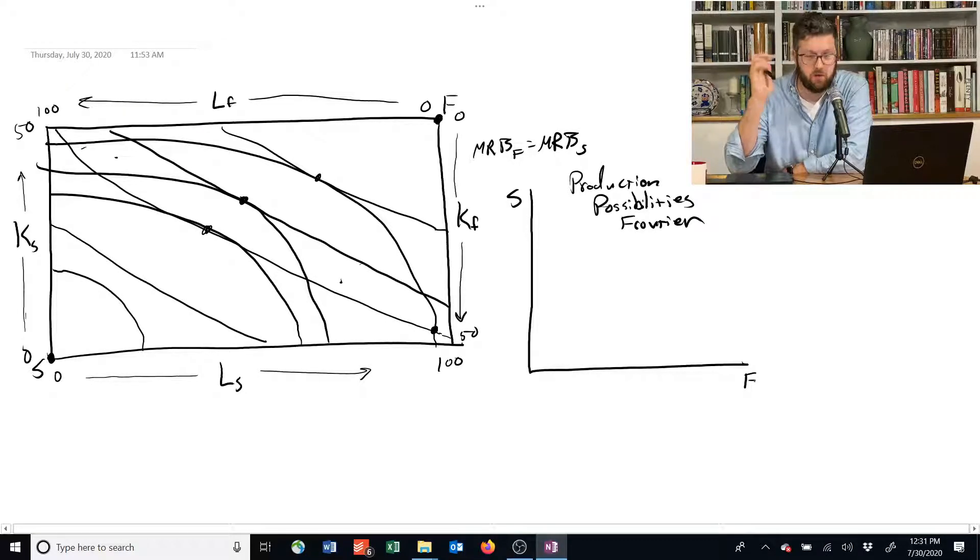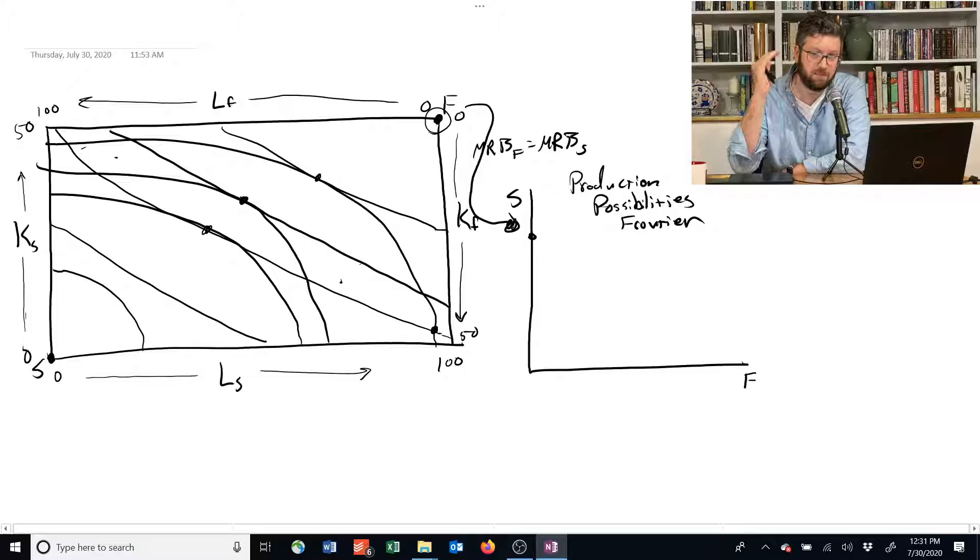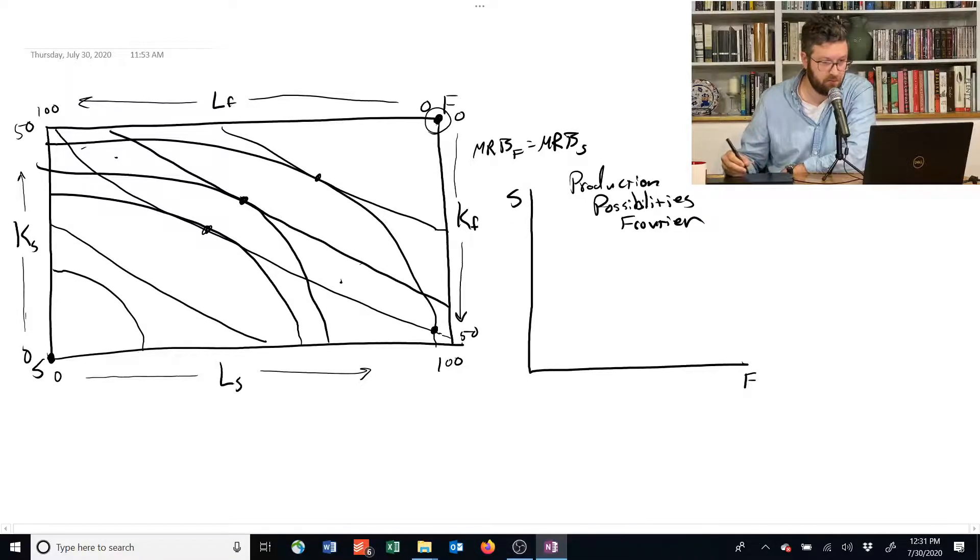Now, we know from this Edgeworth diagram that if we allocate all of our resources to producing shelter, we're up here. We could read off the isoquant and figure out how much we could do. That would correspond to a point somewhere like here, where we're allocating all of the goods to producing shelter. There's some level that's the maximum amount of shelter we can make with the inputs of our economy.